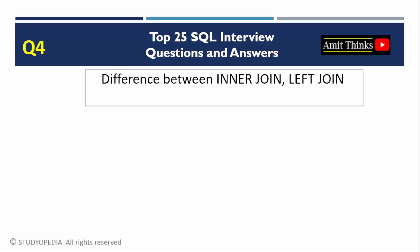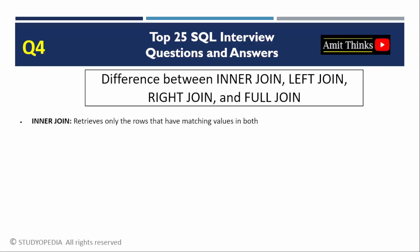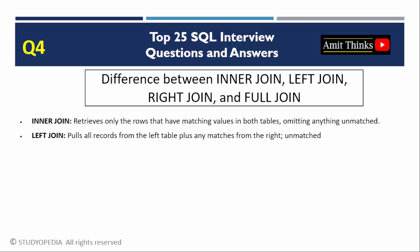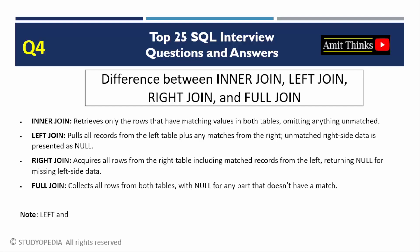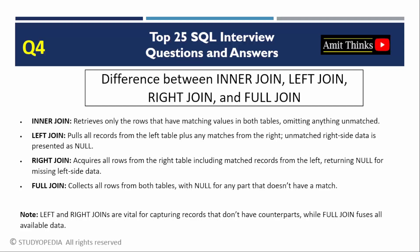Question 4: Difference between INNER JOIN, LEFT JOIN, RIGHT JOIN, and FULL JOIN. INNER JOIN returns only matching rows from both tables; non-matching rows are excluded. LEFT JOIN returns all rows from the left table and matched rows from the right table; unmatched right rows return NULL. RIGHT JOIN returns all rows from the right table; unmatched left rows return NULL. FULL JOIN returns all rows when there is a match in either table; unmatched areas return NULL. Left and right joins are essential for including orphan records, while FULL JOIN ensures complete data integration.